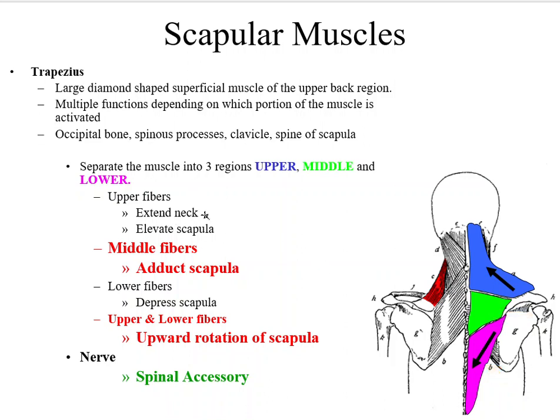Upper fibers extend the neck or the cervical spine and elevate the scapula. Middle fibers adduct or retract the scapula. The lower fibers depress the scapula. And then the upper and lower fibers together, as indicated with these black arrows, create upward rotation of the scapula and provide a force couple, which we'll talk about a little later. The neural innervation for the trapezius is the spinal accessory nerve.